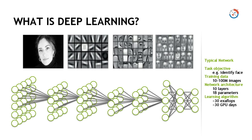One apple shown to a child is enough to train the human brain to identify it. Even the next day, if you present a different apple — say the first was red, but now it is green, smaller, and slightly different in shape — the human brain can still identify it as an apple. A similar object, not the same one, can be identified because of the enormous capabilities of the human brain.